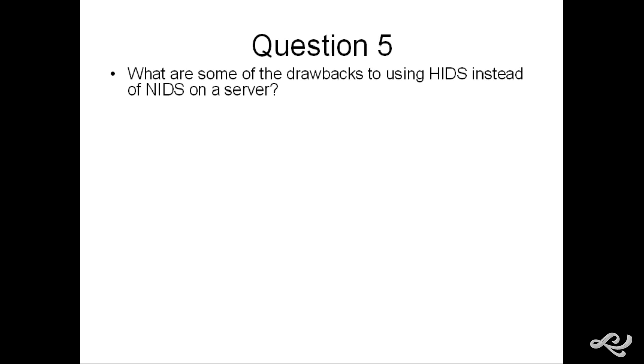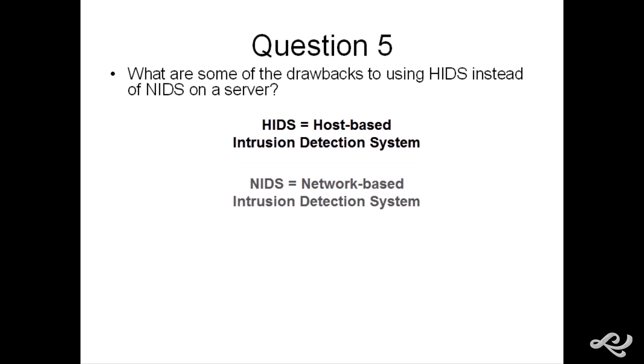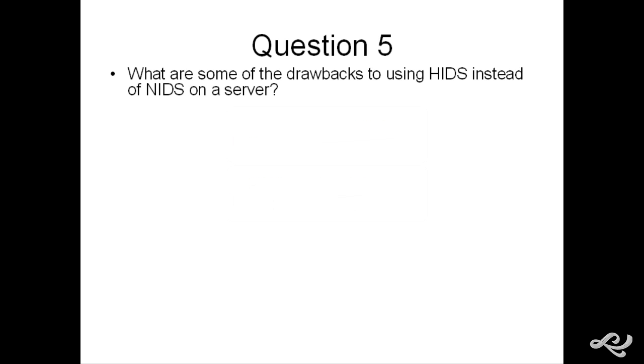Question 5. What are some of the drawbacks to using HIDS instead of NIDS on a server? The first thing we want to do, whenever we see an acronym, is we want to state what is that acronym. HIDS, host-based intrusion detection system. And NIDS, network-based intrusion detection system. HIDS is for one computer or server. And NIDS, although it can be installed on a server or appliance, it usually protects an entire network segment or the whole network. Let's look at the answers.